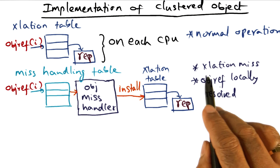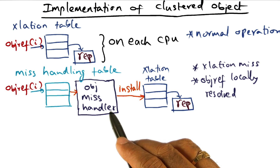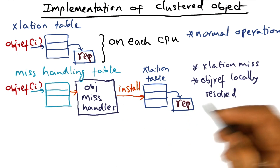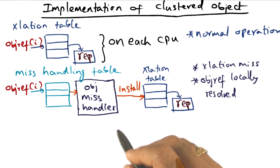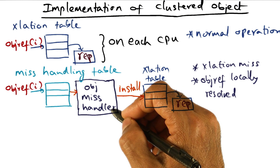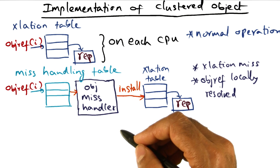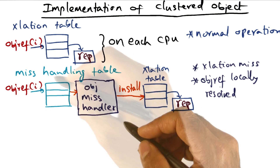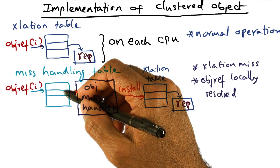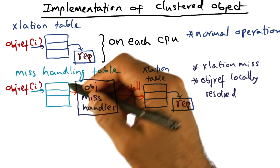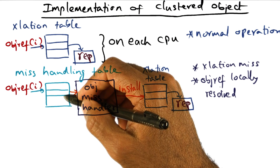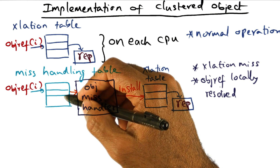So that's the work done by the object mishandler, and this happens on every translation miss. The object reference is locally resolved in this case because the object mishandler is locally available and it can handle that. But it can happen that the object mishandler is not available locally. The idea is that the mishandling table itself is not a replicated data structure — it's a partitioned data structure. Remember that all of these are things being done under the cover to implement the idea of a clustered object.